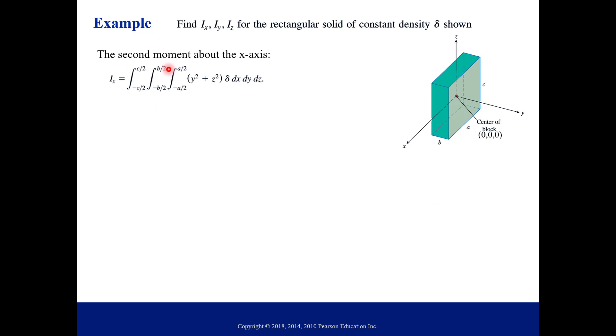So the second moment about the X axis, we're going to start with I sub X. Our moment of inertia about our X axis. Notice what we have for our integrand first is Y squared plus Z squared times our density delta. Now, notice the limits of integration. You just get those from your region. And so we had to kind of look at the picture to figure these out. We know that this object is centered at 0, 0, 0. And if we start with along the X axis, we have this distance as A.